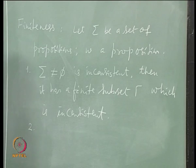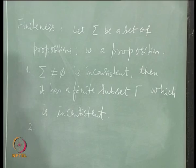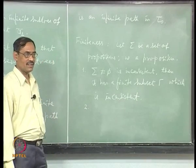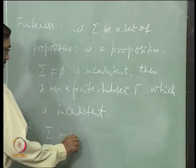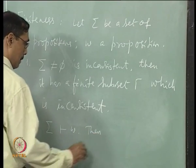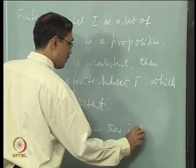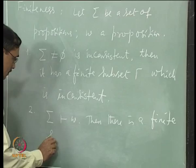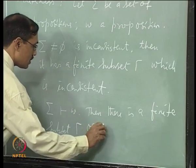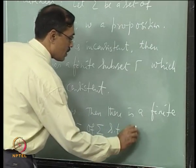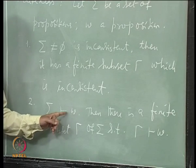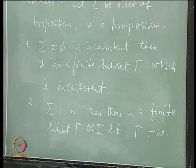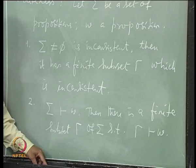If you think of reductio ad absurdum — but here, reductio ad absurdum is inside the definition itself. When you say Σ entails something, it means you have to consider Σ union not-W and the tableau for it. Then you can say: if Σ entails W, then there is a finite subset Γ of Σ such that Γ entails W. This entailment is now in the propositional analytic tableau, not by PC as earlier.